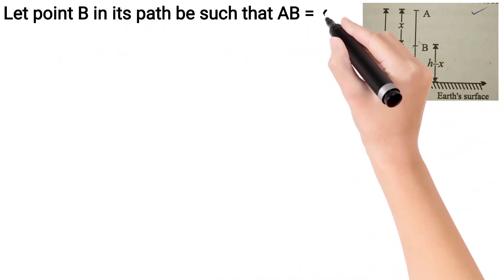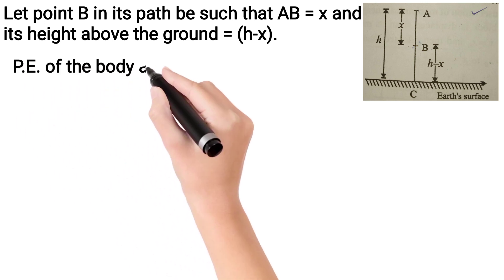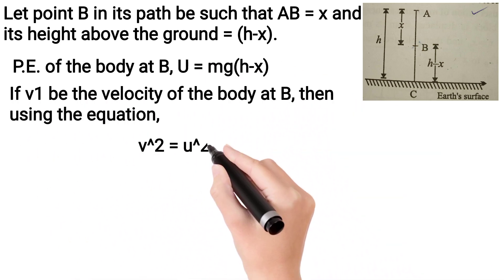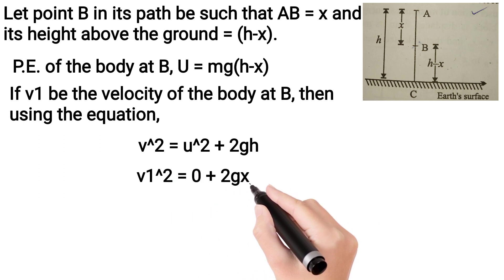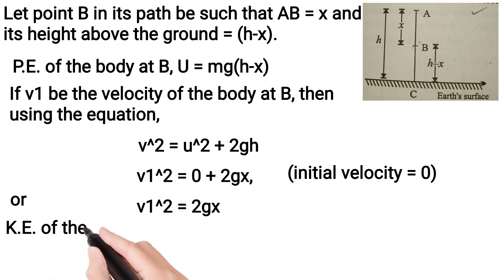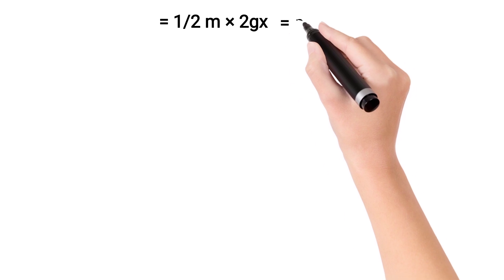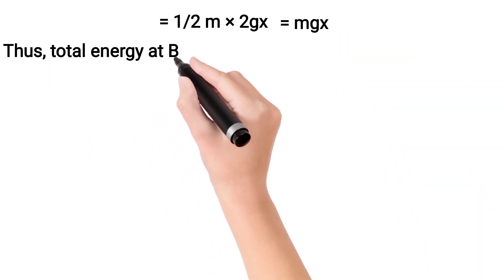Let point B in its path be such that AB is equals to X, and its height above the ground is equals to H minus X. So potential energy of the body at B: U is equals to MG(H minus X). अगर point B में उस body की velocity V1 होगी, तो by the equation V² = U² + 2GX, V1² is equals to 2GX. So kinetic energy of the body at B: K is equals to half M V1², on putting value of V1² we get K is equals to MGX.